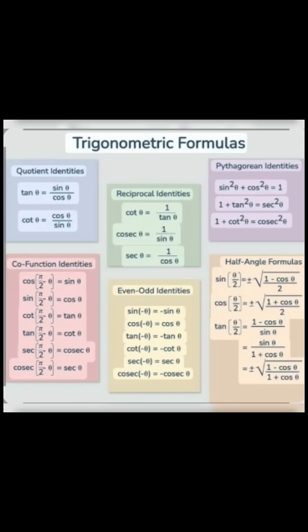Most important trigonometry formulas. tan θ is equal to sin θ upon cos θ. cot θ is equal to cos θ upon sin θ. cot θ is equal to 1 upon tan θ. cosec θ is equal to 1 upon sin θ. sec θ is equal to 1 upon cos θ.